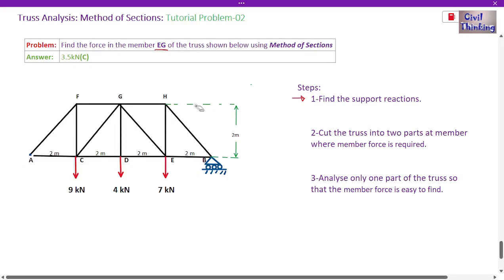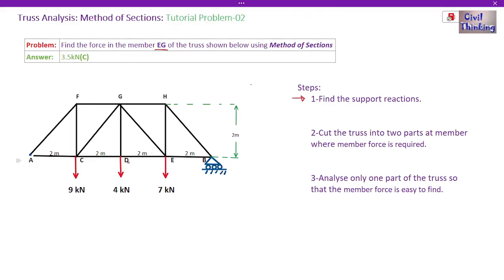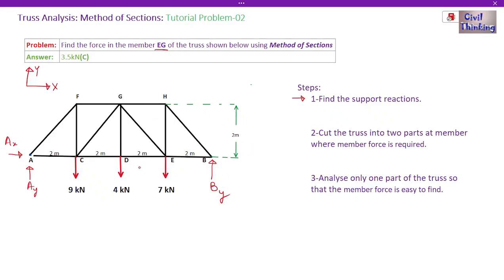We have two reactions at the pin. The horizontal direction is X and the vertical is Y. The reaction at A in the vertical direction is called AY, and in the horizontal direction it is called AX. At B we have a roller, which has only one reaction — upward — called BY. This gives us the free body diagram.